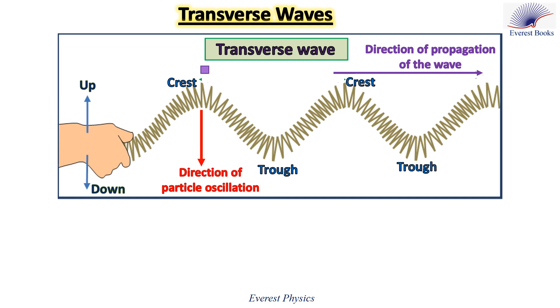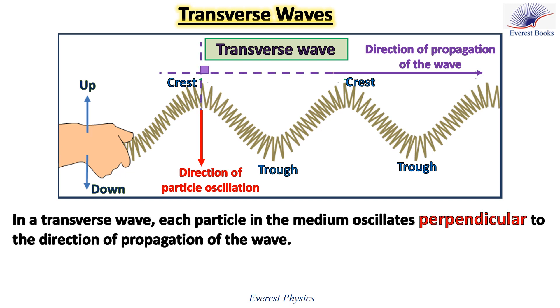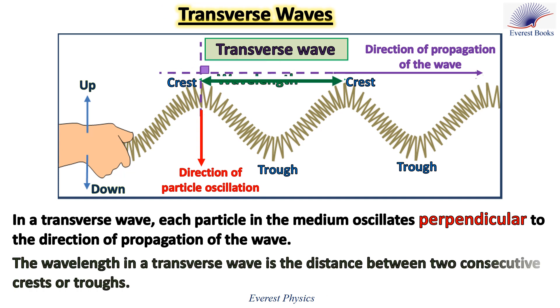In a transverse wave, each particle in the medium oscillates perpendicular to the direction of propagation of the wave. The wavelength in a transverse wave is the distance between two consecutive crests or troughs.